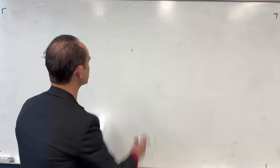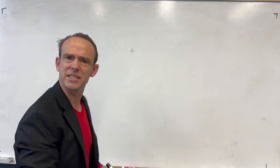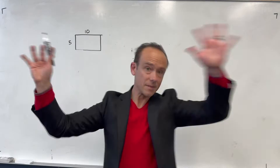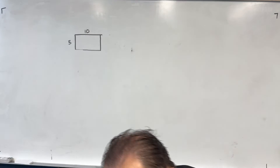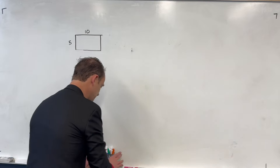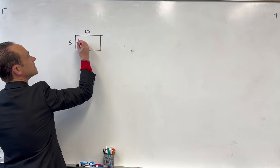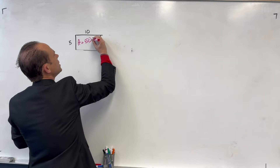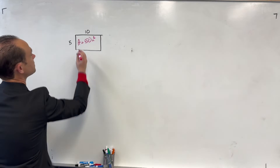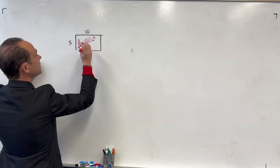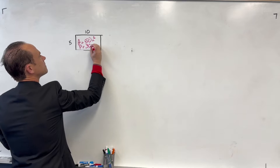Let's look at an example. We've got a rectangle that is 5 by 10. The area is base times height, so the area is 50 units squared. And the perimeter — 5 + 5 + 10 + 10 — is going to be 30 units.